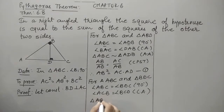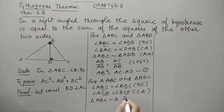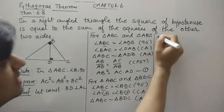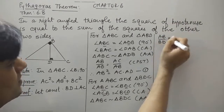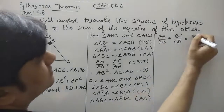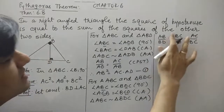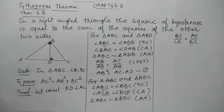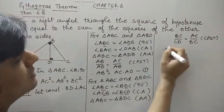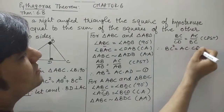So triangle ABC is similar to triangle DBC, where B corresponds with D, A with B, and C with C. Again, when two triangles are similar, corresponding sides are in proportion. Writing BC upon CD and AC upon BC from CPST, and cross multiplying, we get BC² = AC × CD. This is equation number 2.